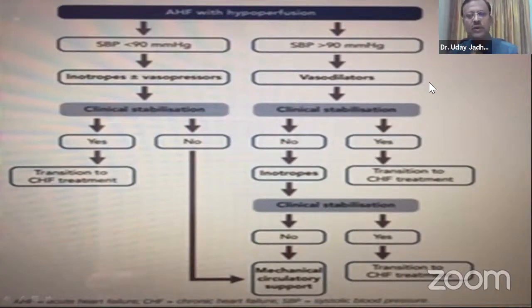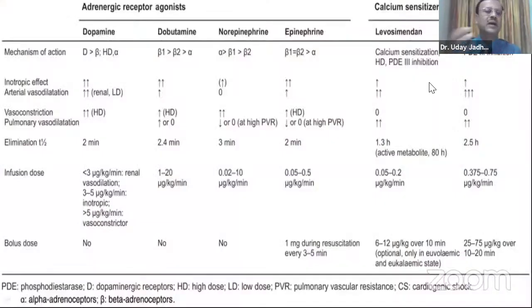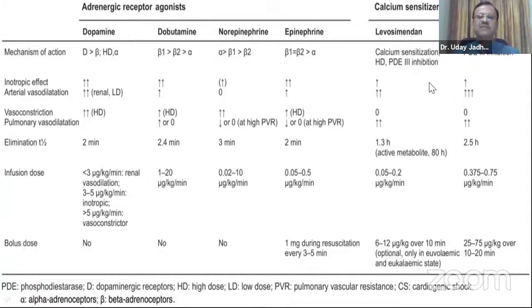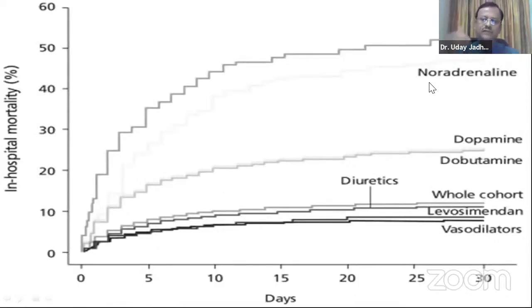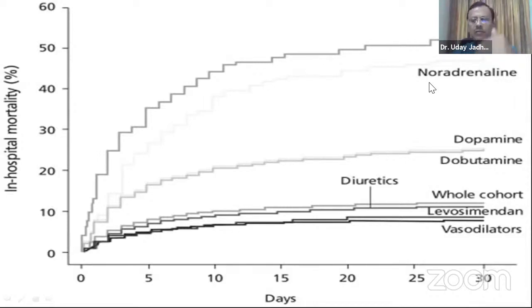If patients are not clinically stabilized on inotropes, they may require mechanical circulatory support. Patients on vasodilators can have an inotrope added; if they stabilize, they proceed to chronic heart failure therapy. Levosimendan and the PDE3 inhibitor milrinone have the least or no vasoconstriction, with levosimendan also offering pulmonary vasodilation. The European Society of Cardiology emphasizes that in-hospital mortality over one month was better with these drugs than traditional dobutamine or epinephrine.